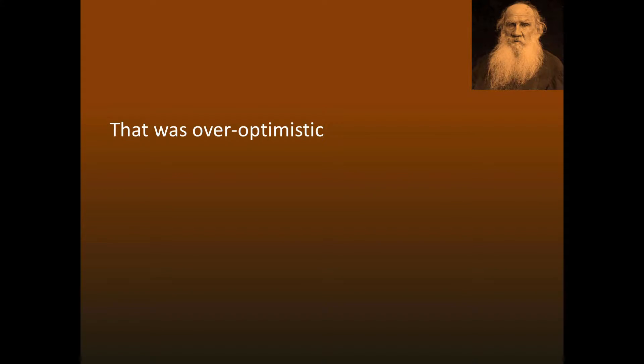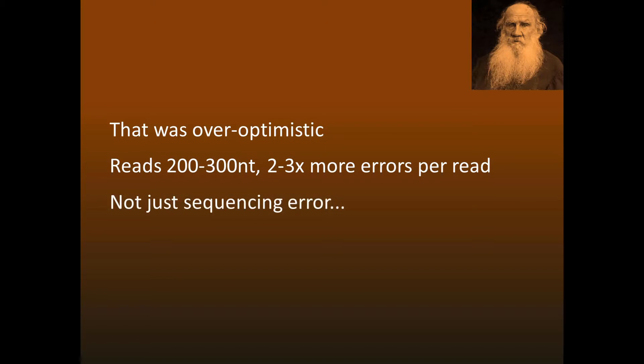Those round numbers were over-optimistic. These days we get 200 to 300 letters per read, or per read pair, which gives 2 to 3 times more errors per sequence. Also, sequencing error is not the only problem. There are also errors due to PCR, such as chimeras, and crosstalk, where reads are assigned to the wrong sample due to barcoding errors.